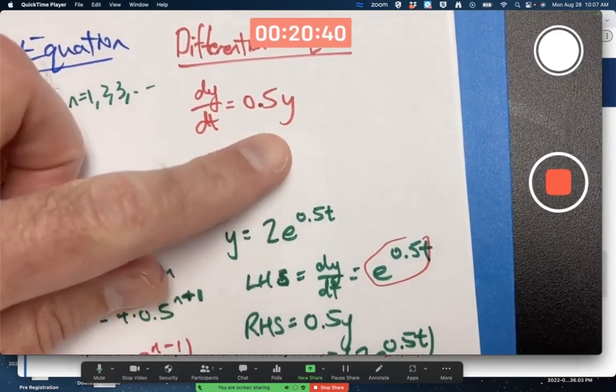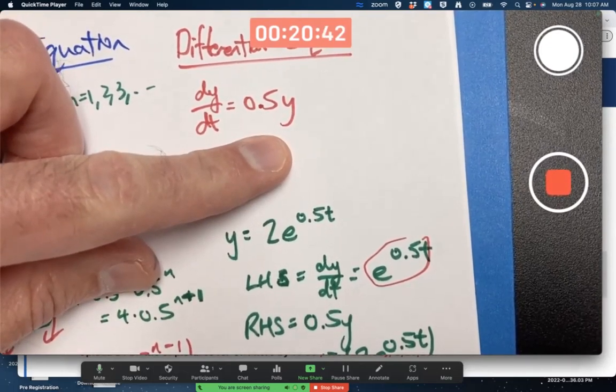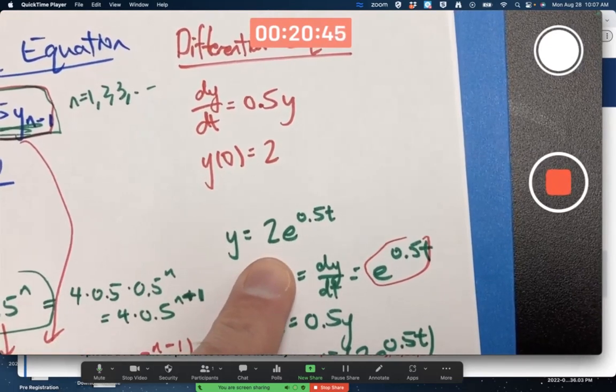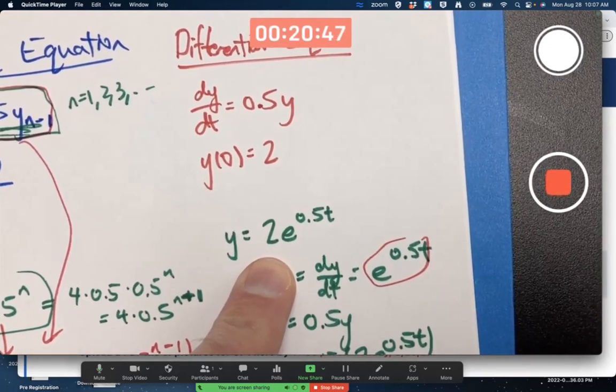I put a 2 in front of it to make the initial condition satisfied. To make this the unique solution of this initial value problem. But if all I cared about was the differential equation itself and not the initial condition, then any constant could go there. And I get what's called a general solution.